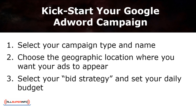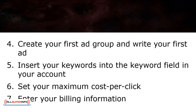1. Select your campaign type and name. 2. Choose the geographic location where you want your ads to appear. 3. Select your bid strategy and set your daily budget. 4. Create your first ad group and write your first ad. 5. Insert your keywords into the keyword field in your account. 6. Set your maximum cost per click. 7. Enter your billing information.